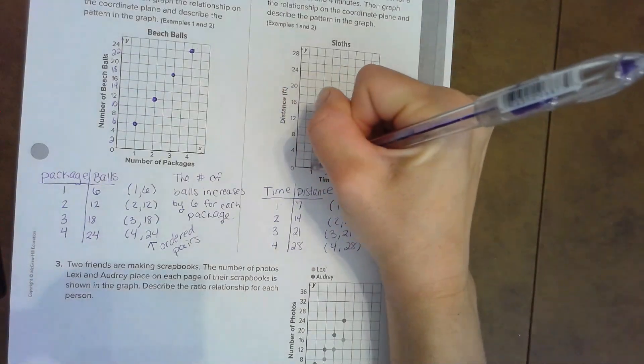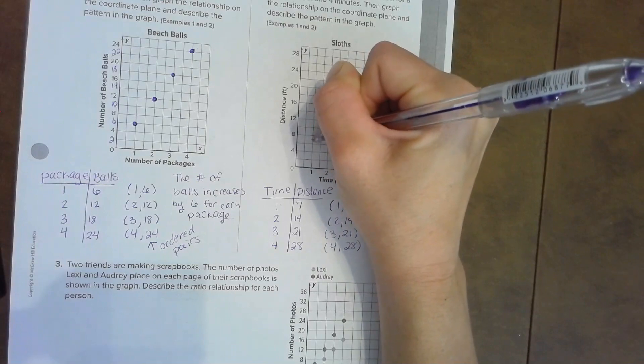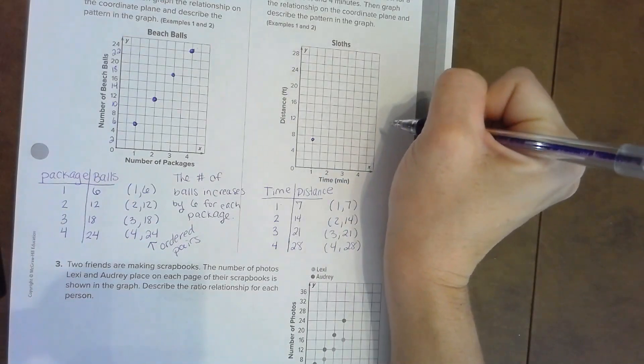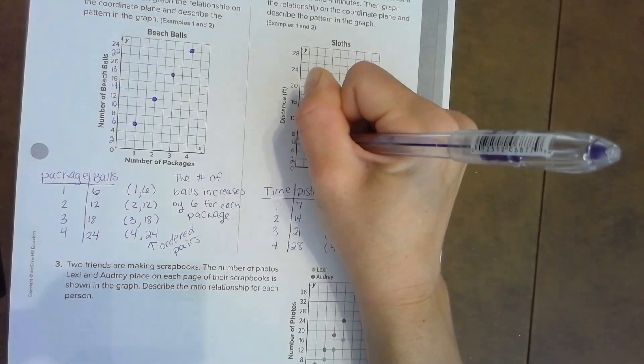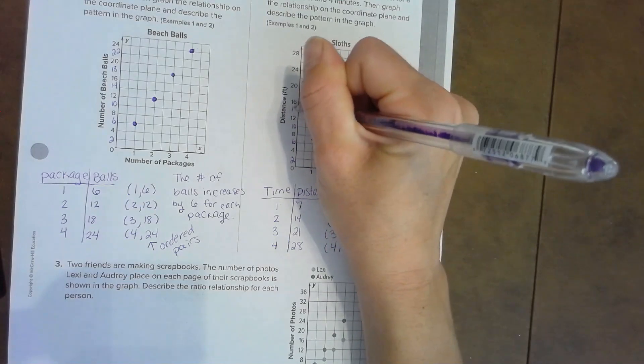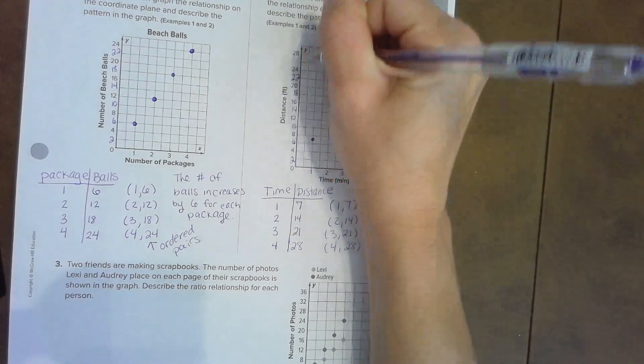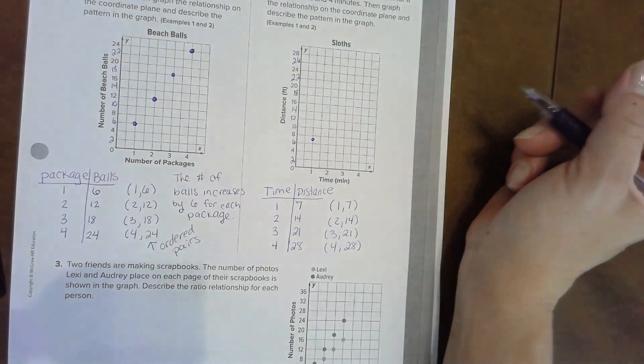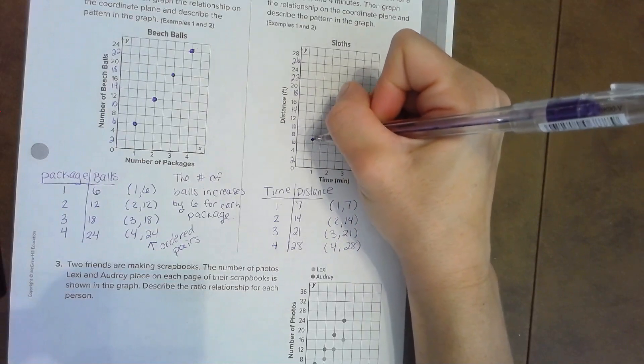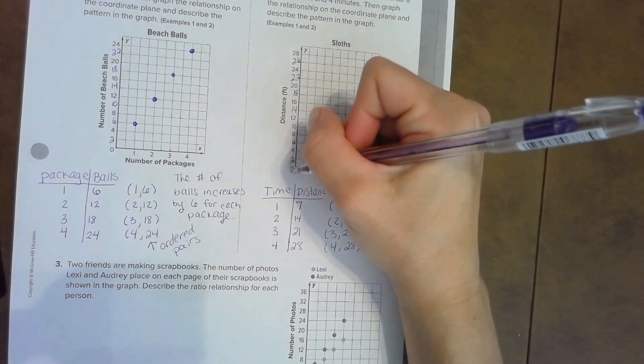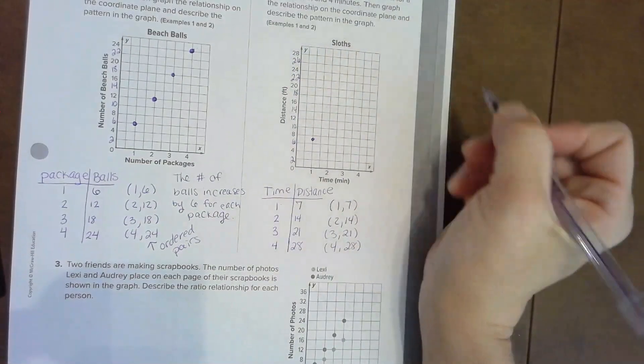Let's graph those. Here's our time, so we go over to one, up to seven. Hmm, I don't quite see seven up there. I wonder what this is counting by. Looks like it's counting by twos: two, four, six, eight, ten, twelve, fourteen, sixteen, eighteen, twenty, twenty-two, twenty-four, twenty-six. So we're counting by twos. Right here in the middle of six and eight is seven.